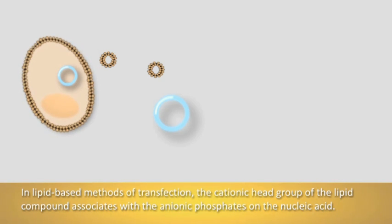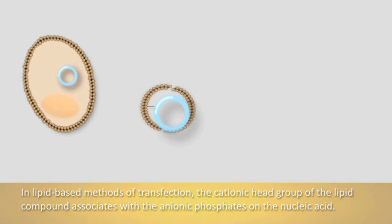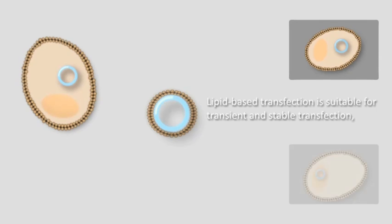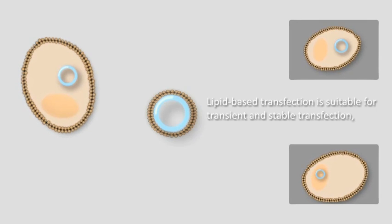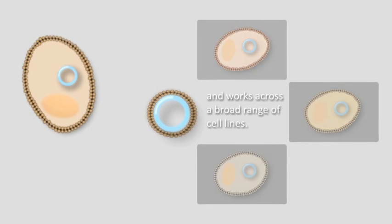This animation focuses on lipid-based transfection, where the cationic head group of the lipid compound associates with the anionic phosphates of the nucleic acid. This method is suitable for transient as well as stable transfection, achieves high efficiencies, and works across a broad range of cell lines.